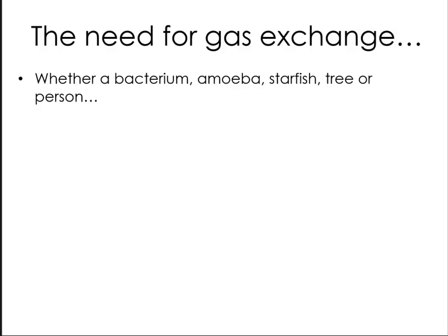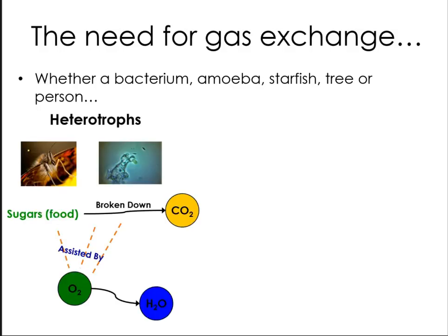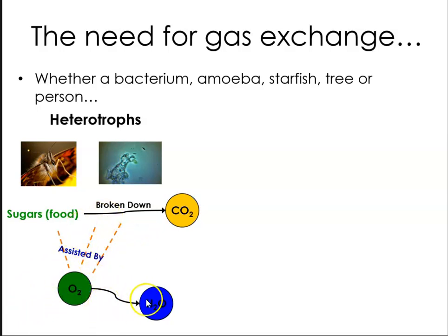So what is the need for gas exchange? Whether it's a bacterium, amoeba, starfish, tree, or person, why do we need it? We talk about organisms that are heterotrophs — organisms that cannot produce their own food. Instead, heterotrophs take nutrition from other sources of organic carbon, for example sugars in food. We talked about carbohydrates being one of the main macromolecules and main sources of carbon. The sugars in food are broken down into nutrients the organism needs, and one of the waste products is carbon dioxide. This whole process is assisted by oxygen, and a byproduct is also water, or H₂O.